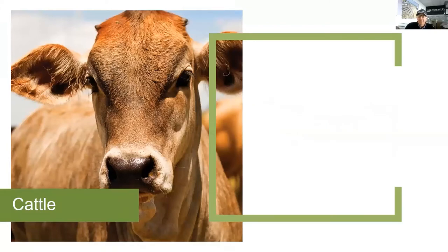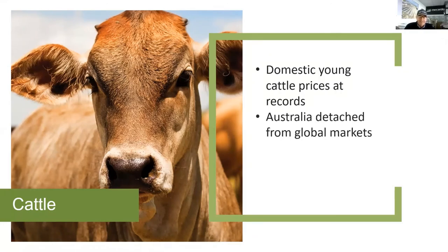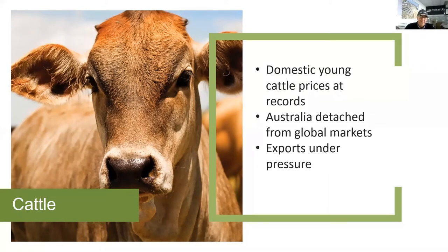Domestic young cattle prices and feedlot cattle prices are at record levels or close to. We're a bit detached from overseas markets because overseas they're not going through a drought recovery. This time last year we had very little restocker demand — restockers weren't buying anything. Now we've got strong restocker demand contributing to our prices, but it means our prices are a little detached from global markets, and our exports are under pressure — more difficult to sell at these prices when competing with cheaper product.